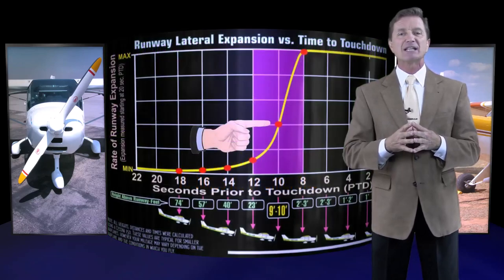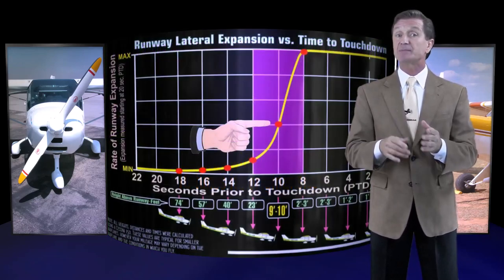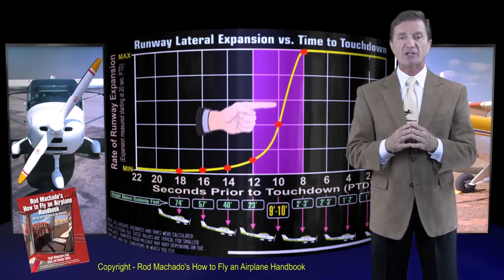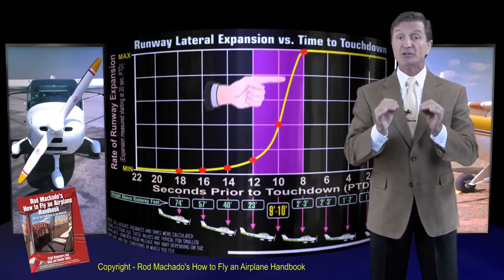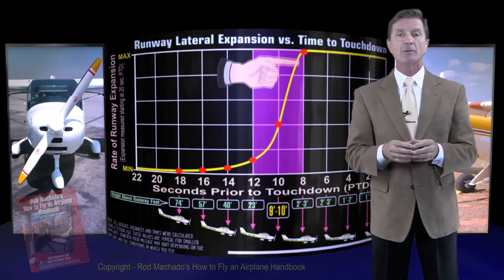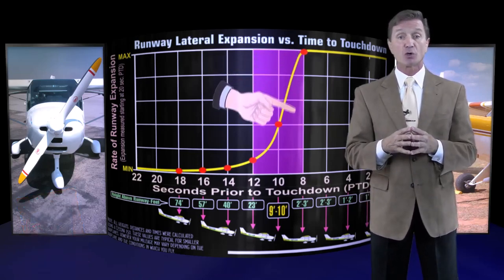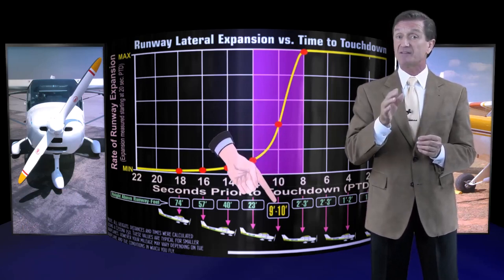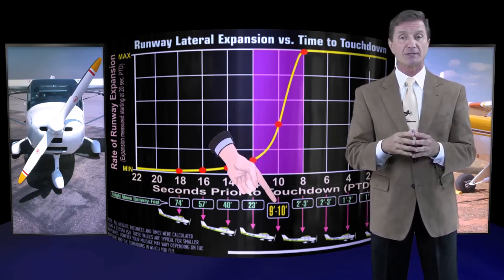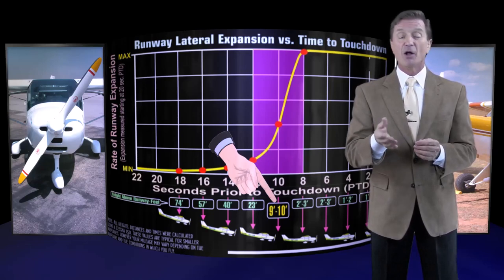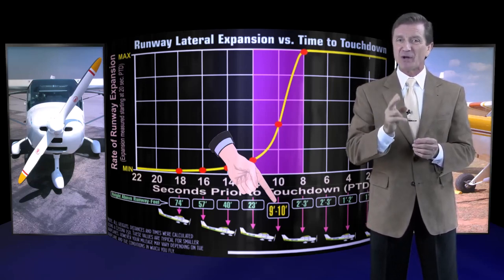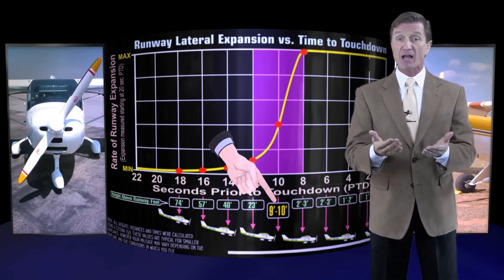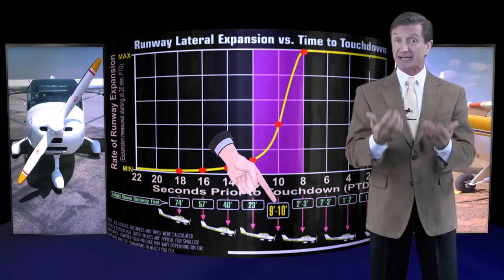Looking at the Runway Lateral Expansion vs. Time to Touchdown graph, you can see how the rate of runway expansion is largest when you are 8 to 10 seconds away from touching down. This expansion also occurs at a point where the airplane is typically around 10 feet above the landing surface. Said another way, the runway dramatically widens in your windscreen right at the point where you should typically begin the roundout followed by the landing flare.